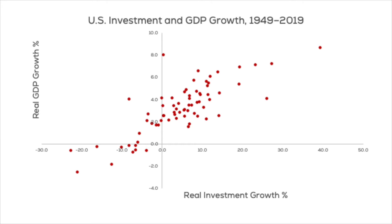But the problem is we don't want to get correlation mixed up with causation — just because two things are related does not mean that one of them is causing the other. In this example, on the x-axis we have the growth rate of investment in real terms, and on the y-axis we have the growth rate of GDP in real terms. What we find is that there is a positive relationship: when the investment growth rate is positive, the growth rate in GDP is positive as well. But that is not the same as saying investment is causing real GDP growth — the graph is saying only that the two are related.